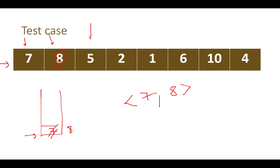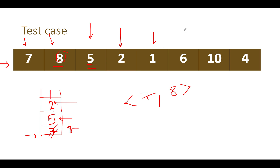Next we see five. The topmost element is eight, which is higher than five, so we can't remove it — we simply add five to the stack. Next element is two. Two is also lower than the topmost element, so we add it to the stack. Next we see one. One is lower than two, the topmost element, so we add one to the stack as well.